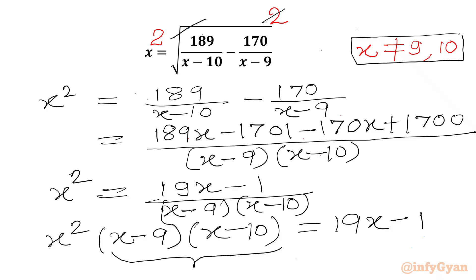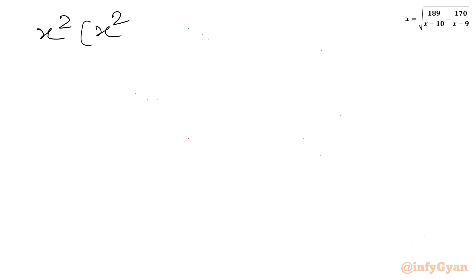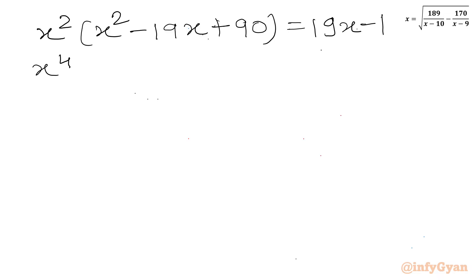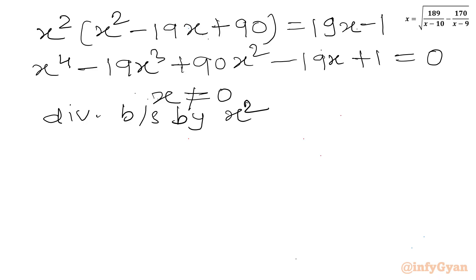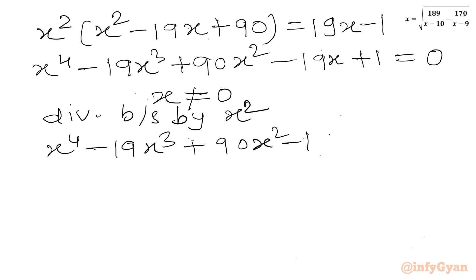Now I will multiply these two brackets first. Expanding gives x² times (x² minus 19x plus 90), and after rearranging we get x⁴ minus 19x³ plus 90x² minus 19x plus 1 equal to 0.